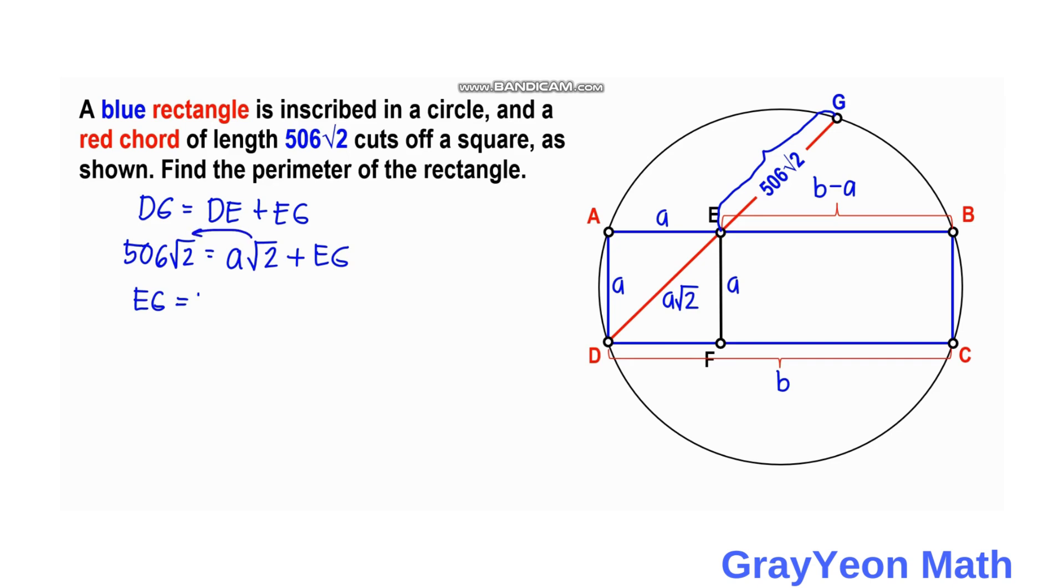But actually we can factor out the √2. So EG is equal to (506 minus a)√2.